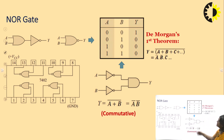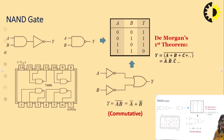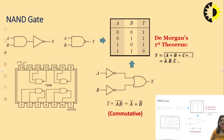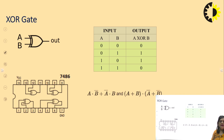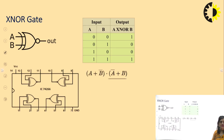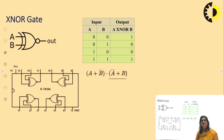The NAND gate IC is 7400. Pin 1 and pin 2 are the inputs, and pin 3 is the output. NAND is the complement of the AND gate. The XOR gate truth table expression is AB̅ + A̅B, and its IC is 7486 — it contains 4 XOR gates. The XNOR IC is 74266, which also has 4 XNOR gates.